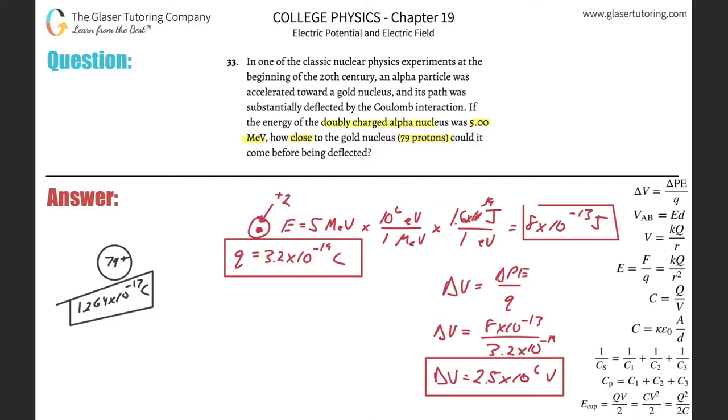Now here's the key to the problem. Whatever the alpha particle's change in potential is, is due to the potential being produced at the point of deflection by the gold nucleus. So basically, the highlight here is that this change in the potential of the alpha particle will be equal to the potential being produced at the point of deflection by the gold nucleus. So in other words, what I highlight over here on the right-hand side in terms of the formulas, they're equal.